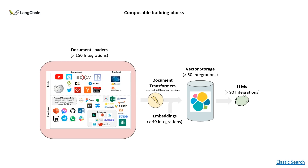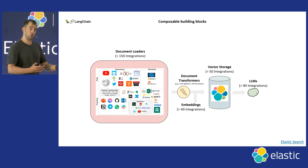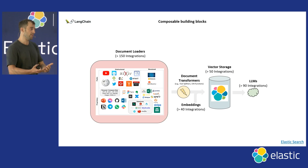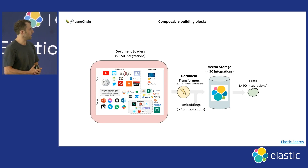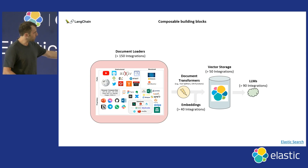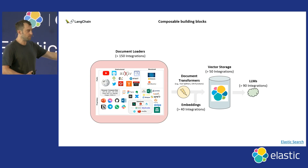You can interoperate these components. There are many different document loaders — you can load structured or unstructured data from public or private sources into any vector store you want. There are over 40 embedding models you can use. LangChain gives you a breadth of options: over 150 document loaders, over 40 embedding models, and over 50 vector stores.